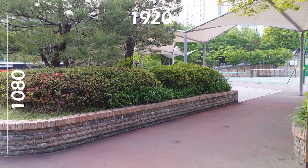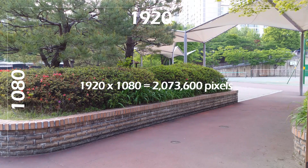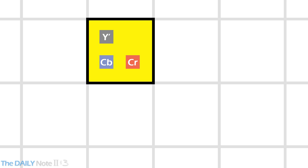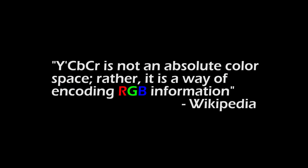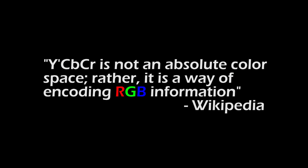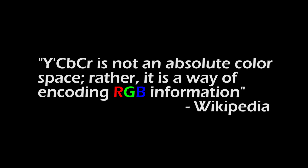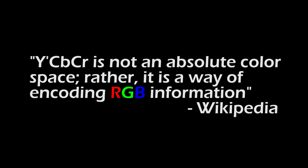To understand what chroma subsampling is, let's look at a grid of pixels representing 1080p video — approximately 2 million individual dots of color. Zooming into a single pixel, it is made up of 3 different pieces of data: the luma value Y tells us how bright the pixel should be, and the 2 chroma values CB and CR tell us what color the pixel is. Now, you might be thinking computers use RGB values to process color information — most of the time that is correct. However, when talking about video data recorded on consumer products today, it uses Y, CB, CR, not RGB. So let's forget about RGB for the remainder of this video.